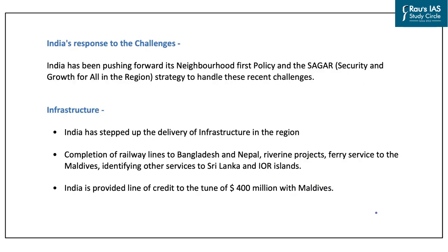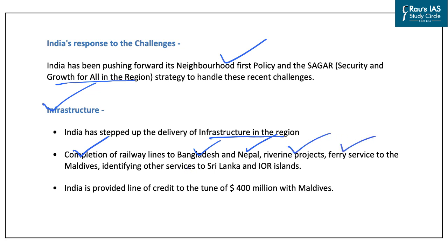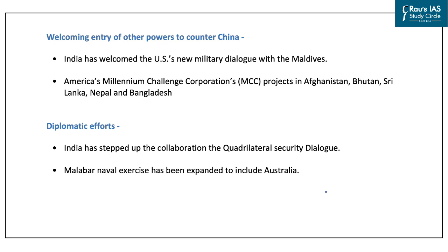India's response to these challenges has been to push forward the Neighborhood First policy and the SAGAR strategy — Security and Growth for All in the Region. India has stepped up delivery of infrastructure projects, including completion of railway lines to Bangladesh and Nepal, various riverine projects, and identified important projects in Sri Lanka and the Indian Ocean region. India has also provided a line of credit of $400 million to Maldives. To counter Chinese influence, India has welcomed the entry of other powers in the region.